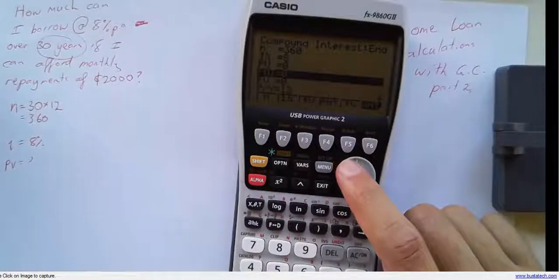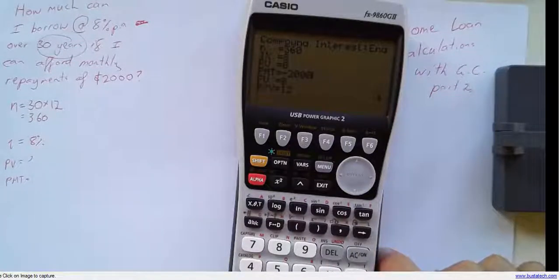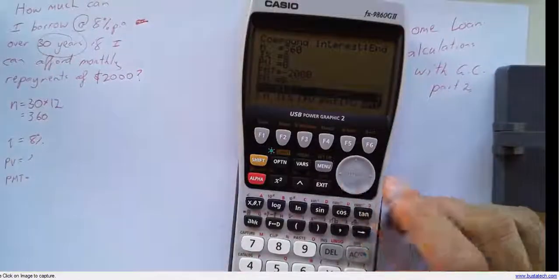Next is our present value, which we don't know. That's what we're trying to find out. But we do know that our payments are minus $2,000 a year. Remember, your payments are negative because it's money coming out of your pocket.